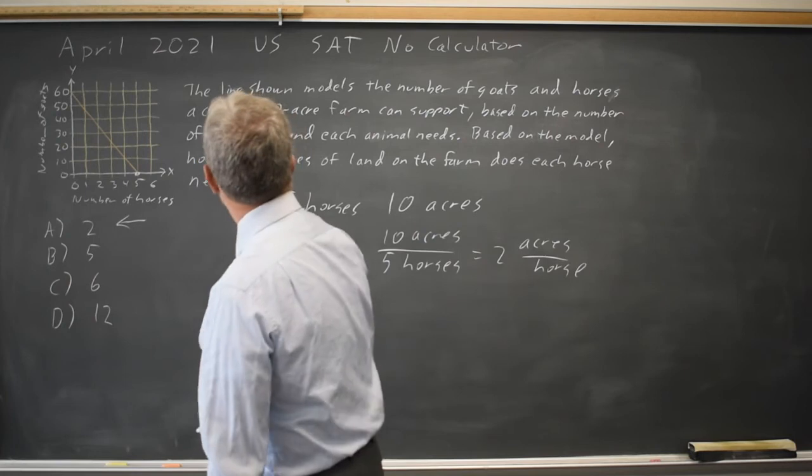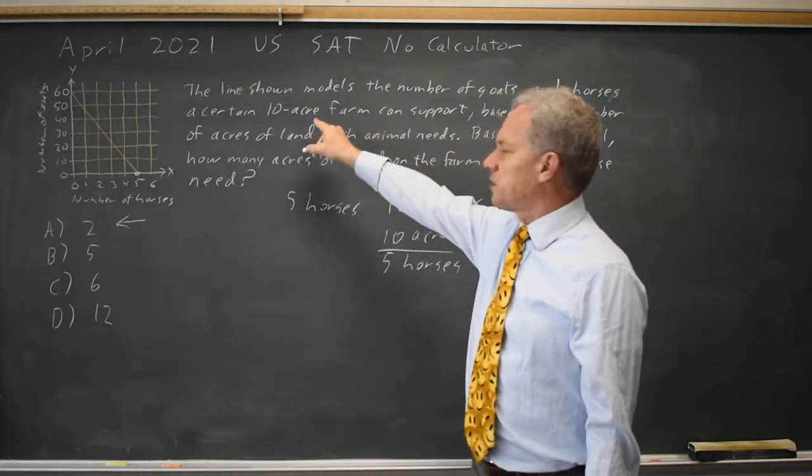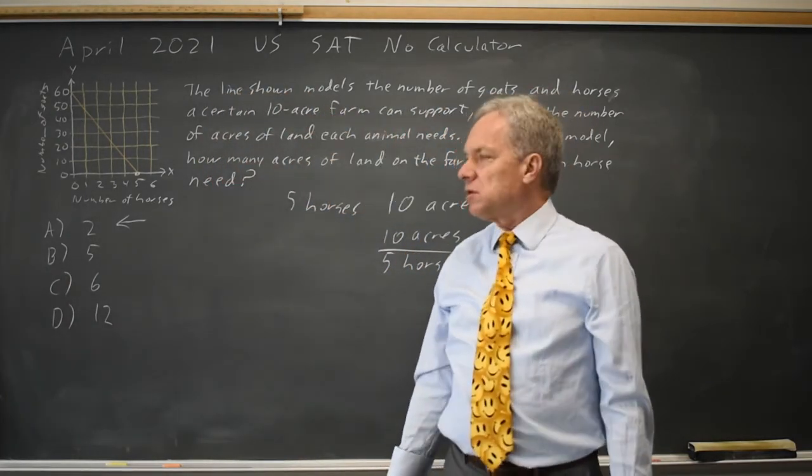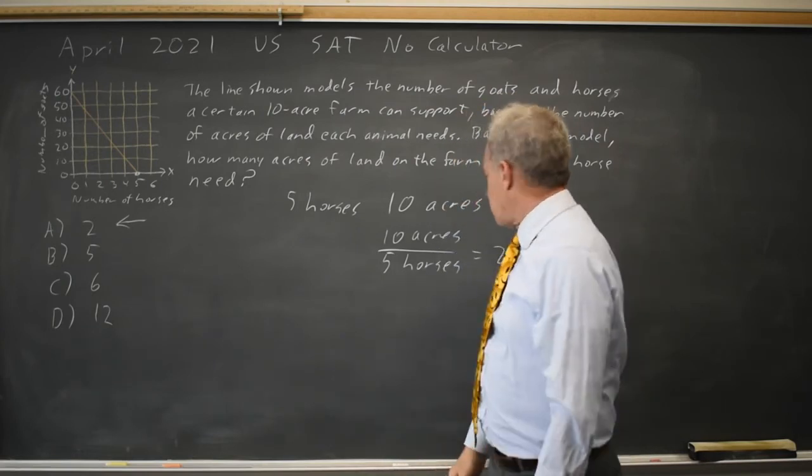X equals 5, Y equals 0. And 5 horses on a 10-acre farm is 2 acres per horse.